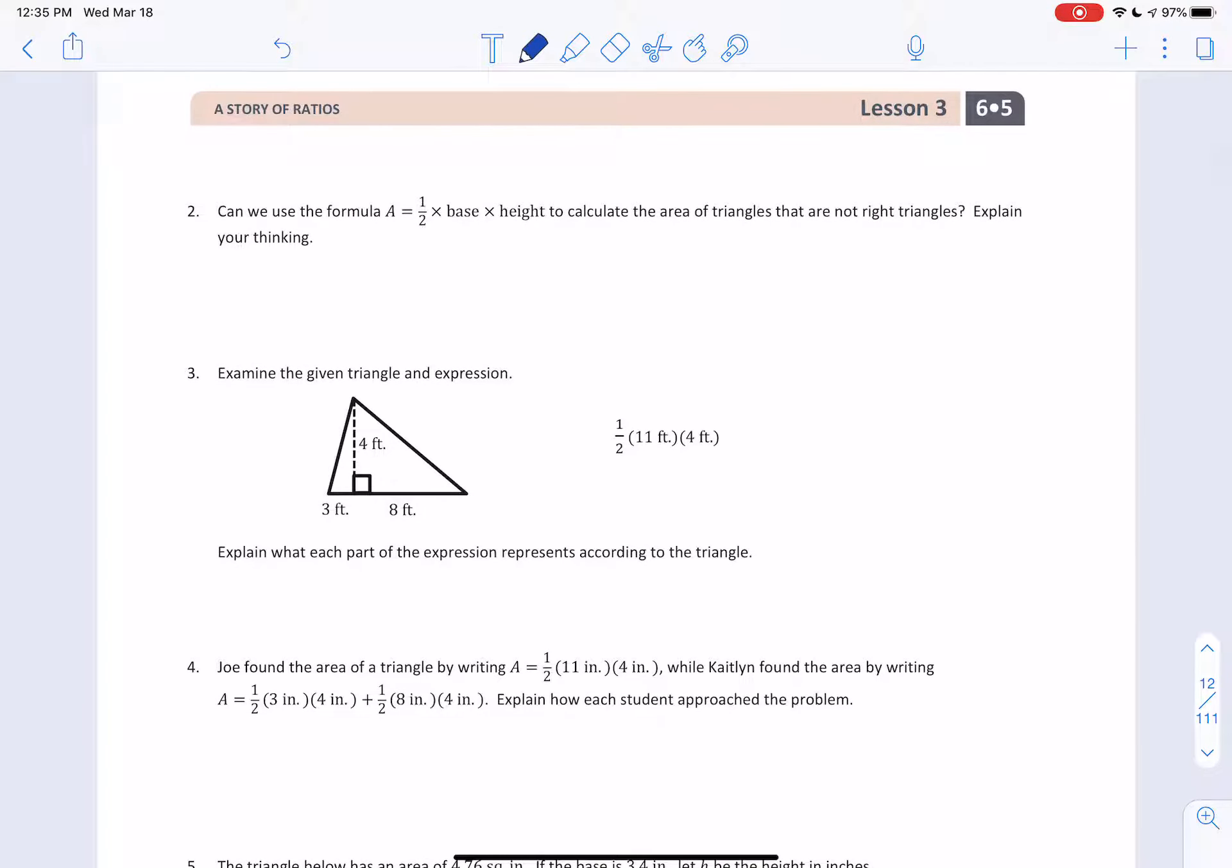All right, let's move on. Question number two, can we use the formula area equals one half times base times height to calculate the area of triangles that are not right triangles? Yes. The answer is yes. Other types of triangles definitely do have a base. They definitely do have a height. So all you need to do is identify the base and identify the height and divide it by two. It's the same exact thing.